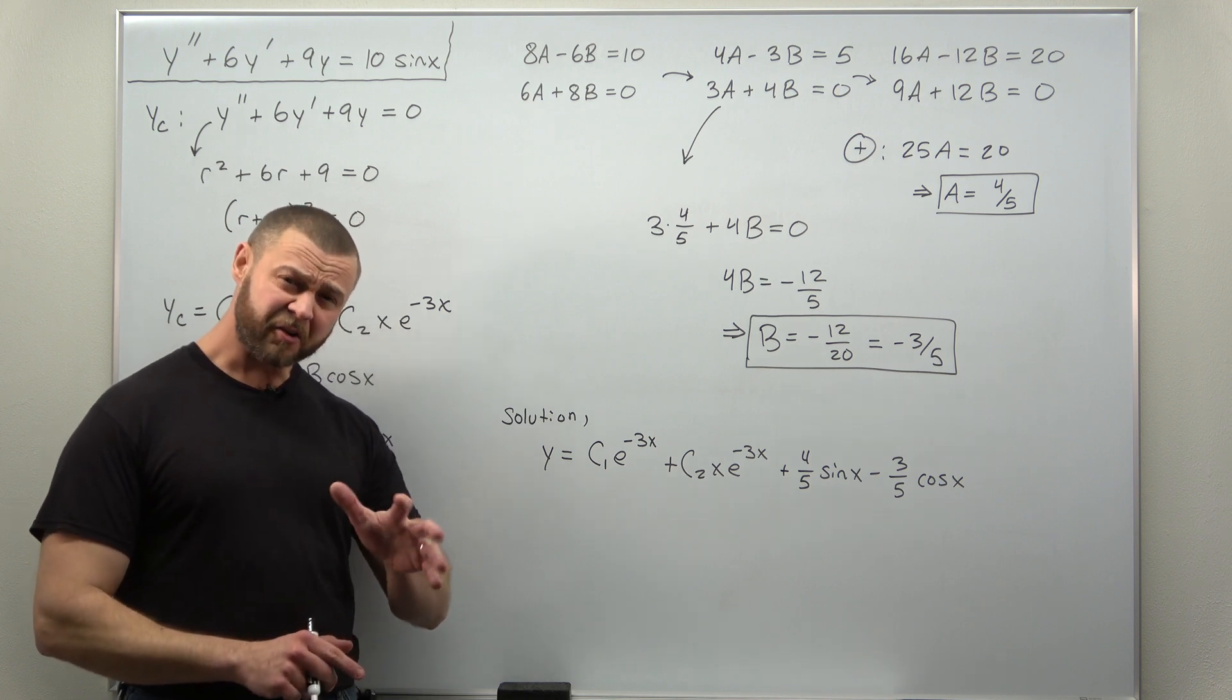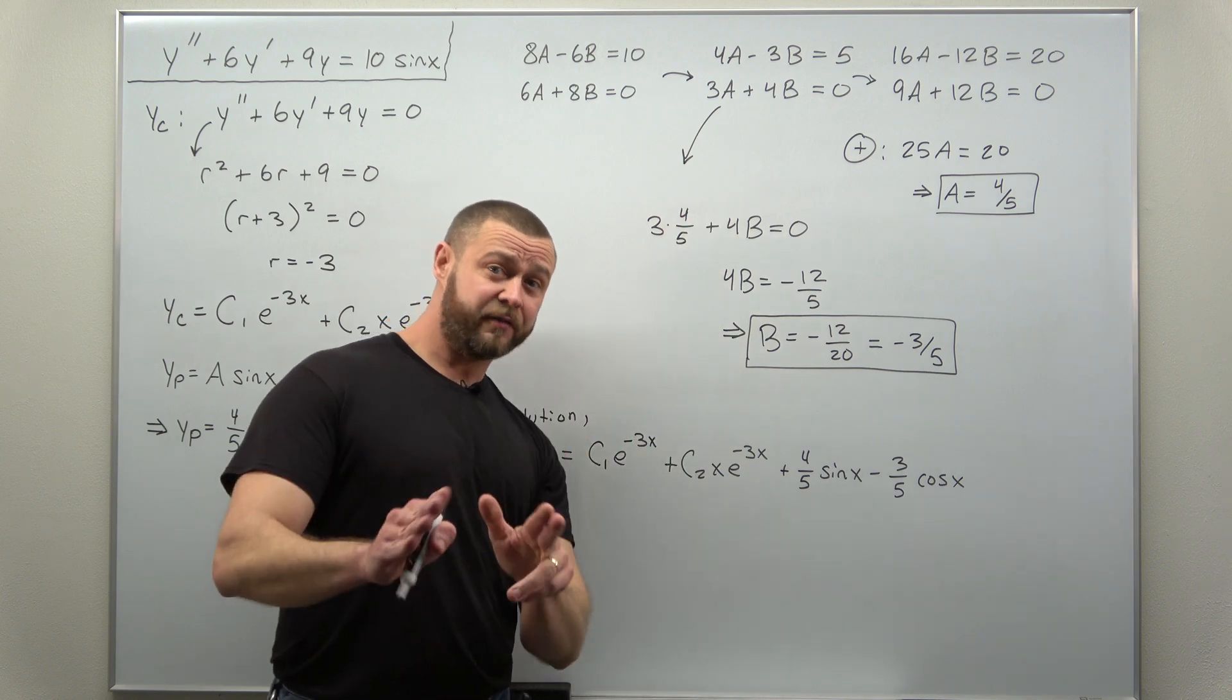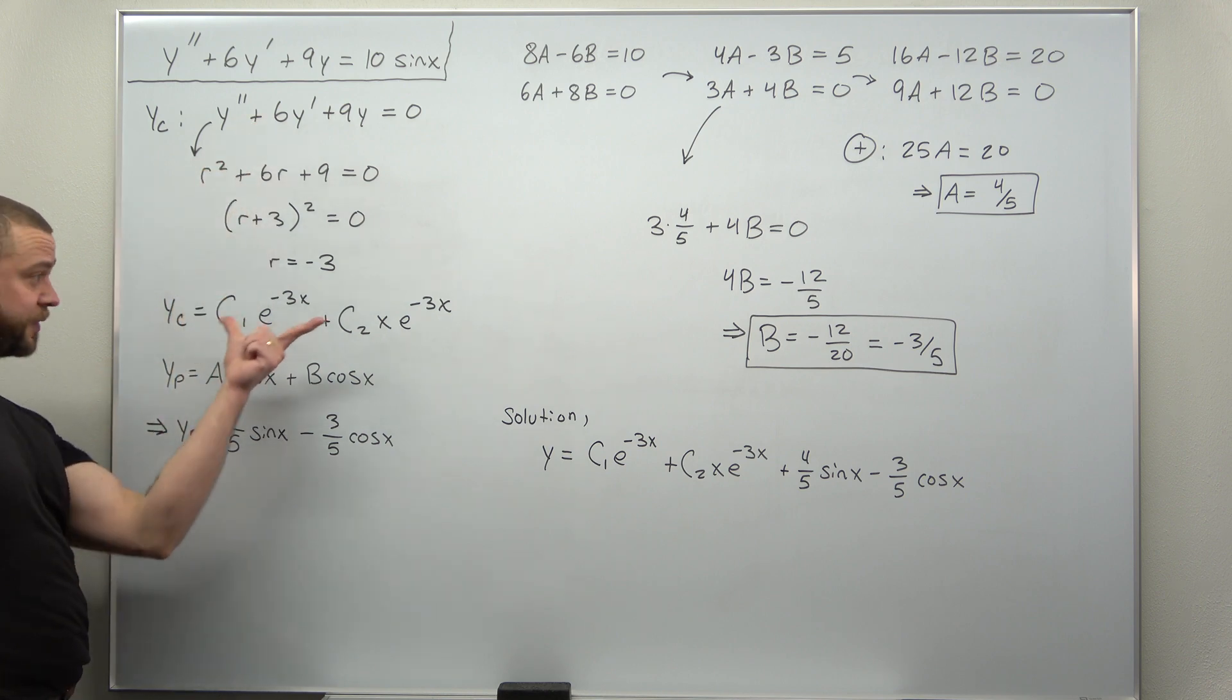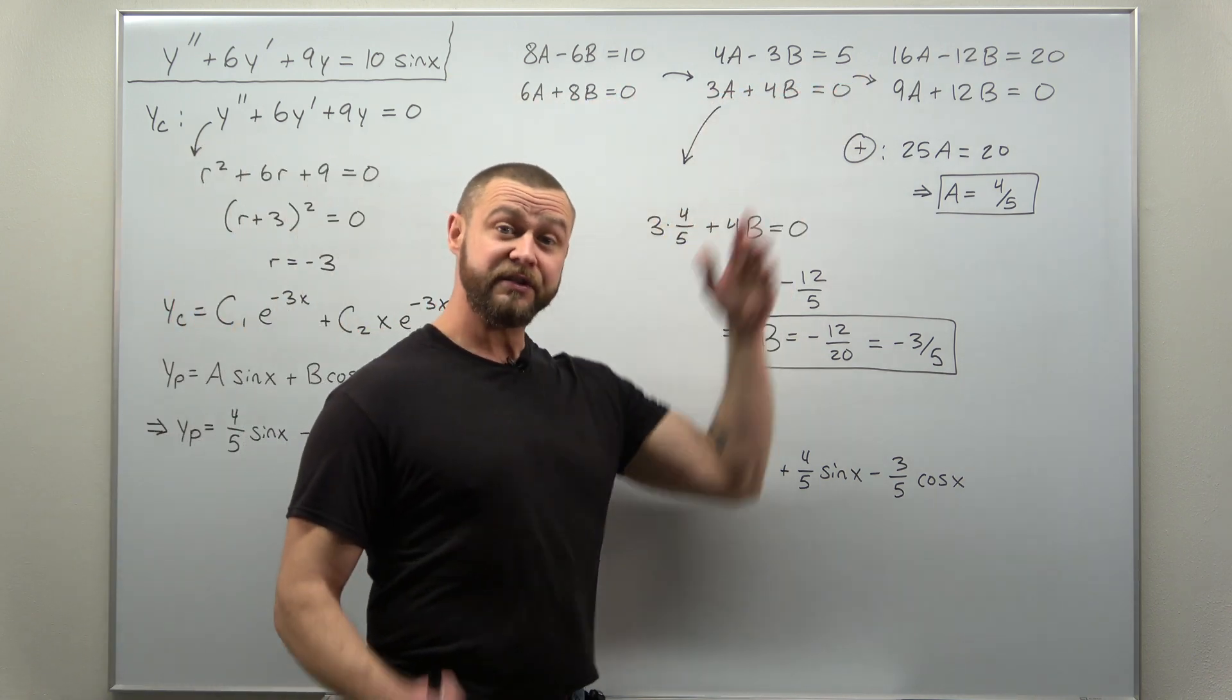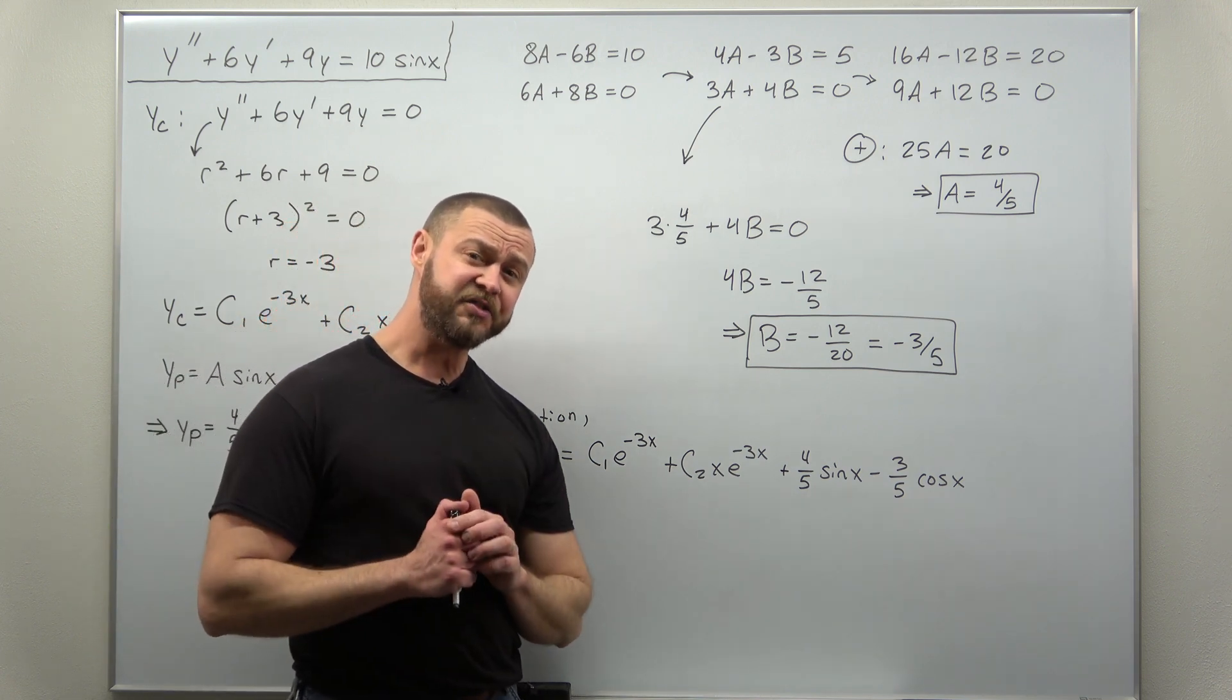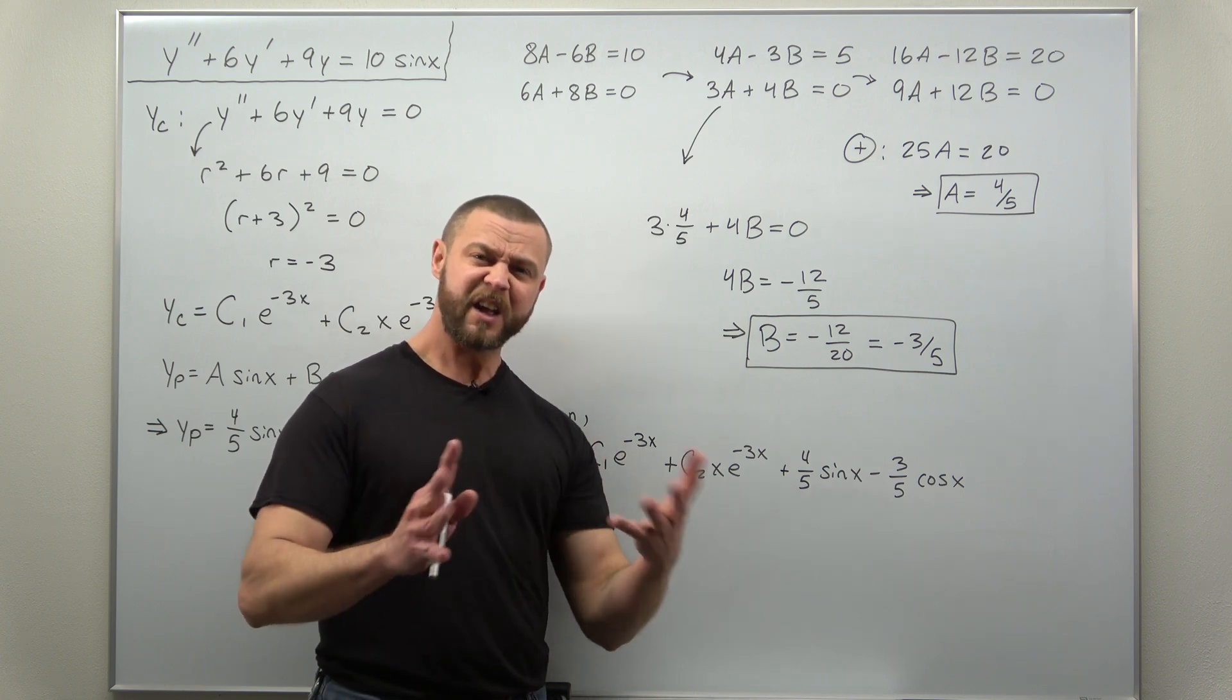This was a moderately challenging example, really not that bad if you're comfortable solving systems of equations very quickly. To be honest, that's probably where most of the work was. Everything else was pretty simple. Getting your complementary solution goes really quick. Differentiating yp, this combination of sines and cosines, goes really quick. The only part that takes a little bit of time is solving those systems of equations. This is probably a standard example of what you can expect in your differential equations course. This is a good exam question. It's not too simple, not too challenging either. It's a good amount of work.